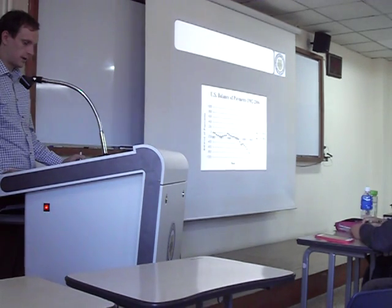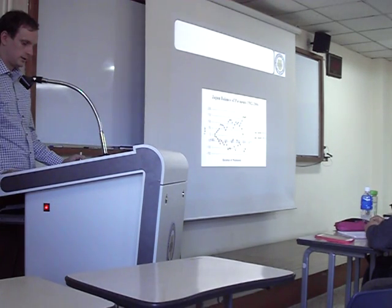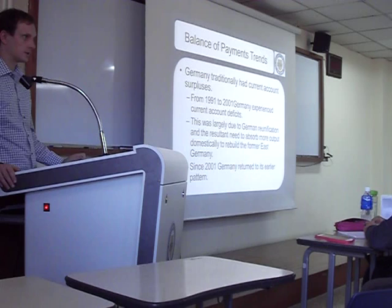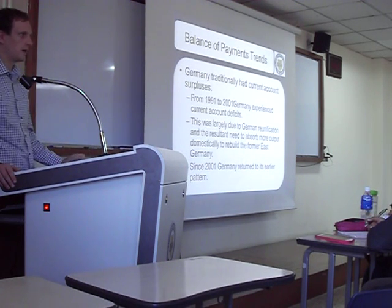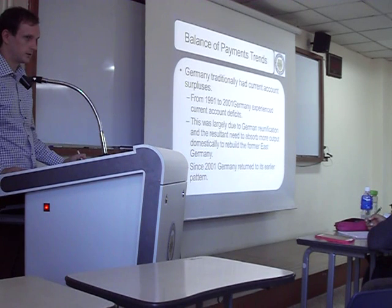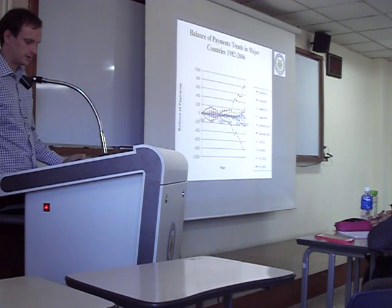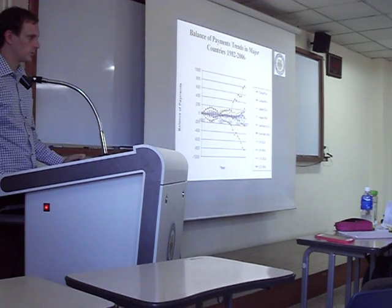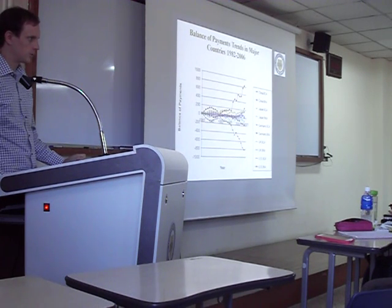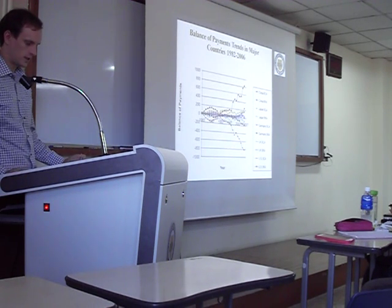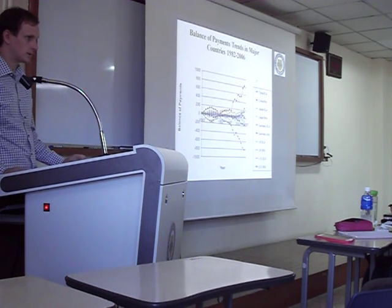We saw the trends in the balance of payments. Does the US have a current account surplus or deficit? Deficit. Does Japan? Surplus. Does Korea export more or import more? Export more — so current account surplus. Germany? Surplus. The UK? Deficit. There's a clear trend: some countries constantly have deficits, some constantly have surpluses.